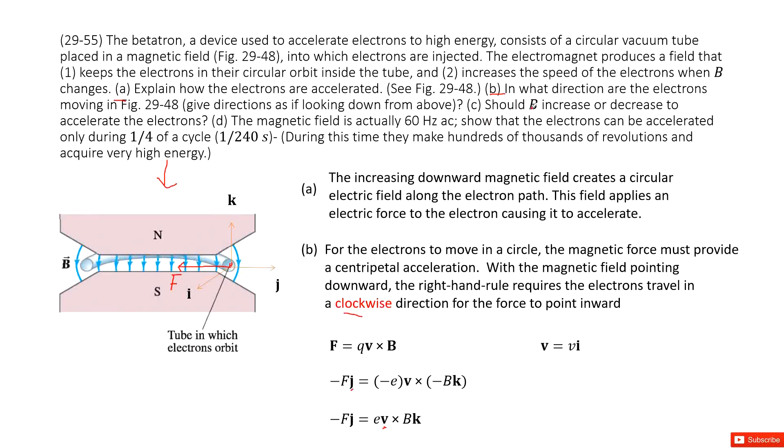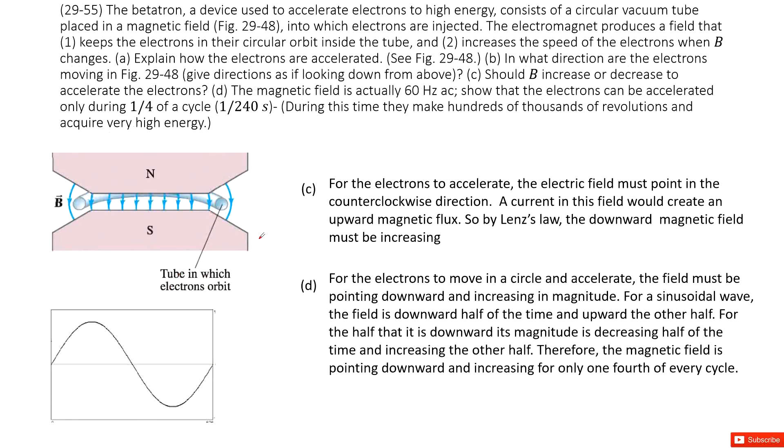The second part: should B be increased or decreased to accelerate the electrons? Things become easy. We talk about the electrons there. For this circle,